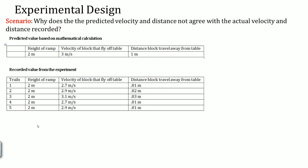Here are some values. The predicted values are right here using calculations, and this is actually the recorded value from the experiment. Why does the predicted velocity and distance not agree with the actual velocity and distance recorded? Notice that the velocity of the block that flies off the table is actually less, except this one is greater for some reason, and the distance traveled is super small as well. It's like off by 0.20 meters.